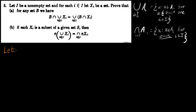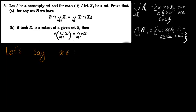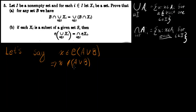Before we get started, let's talk about something. Let's say x is in the complement of just the union of two sets A and B. If x is in the complement of A union B, then that implies that x is not in A union B. In order for x to not be in A union B, x cannot be in A and x cannot be in B.